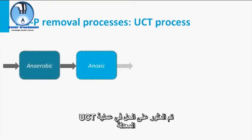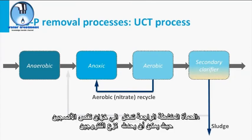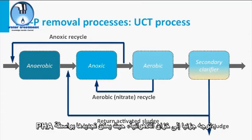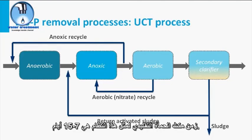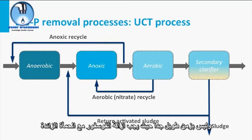A solution is found in a modified UCT process. The return activated sludge is introduced in an anoxic tank, where denitrification can take place. The mixed liquor after denitrification, thus with low nitrate concentrations, is partly directed to the anaerobic tank, where it can be replenished with VFA. Typical sludge retention times for such systems are 7 to 15 days — not too short, since PAO are relatively slow growing, as well as the required nitrifiers, and not too long, because P needs to be removed with the waste activated sludge.